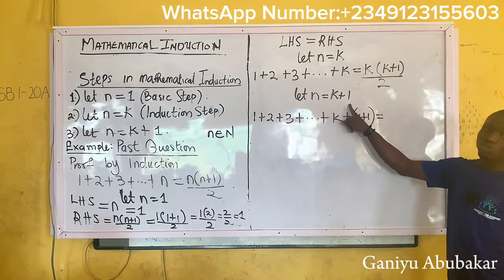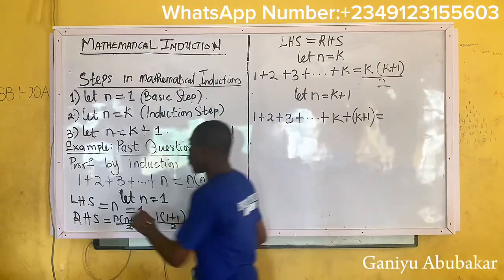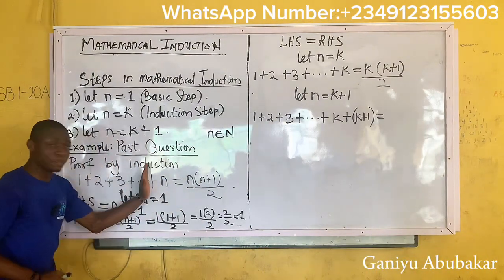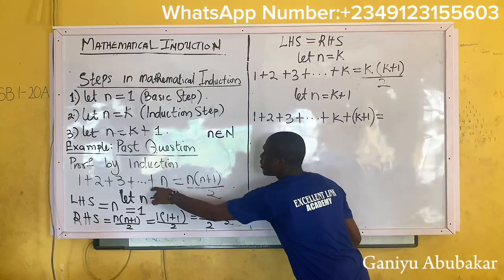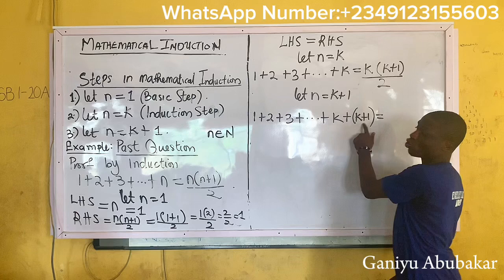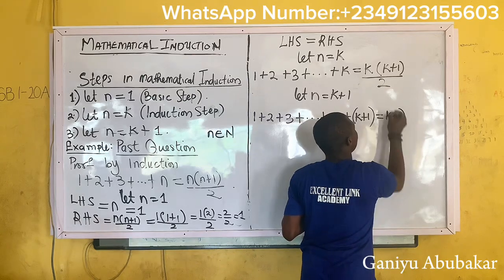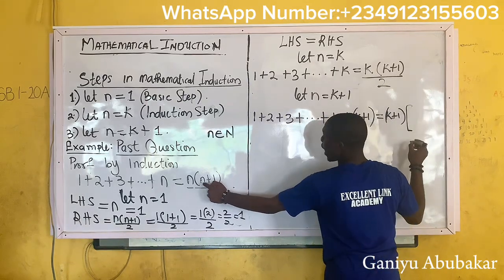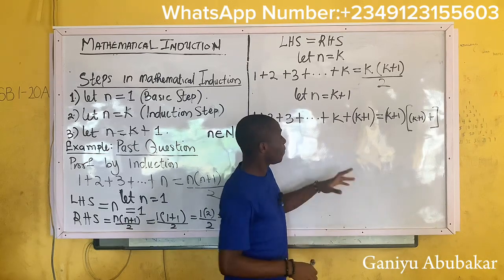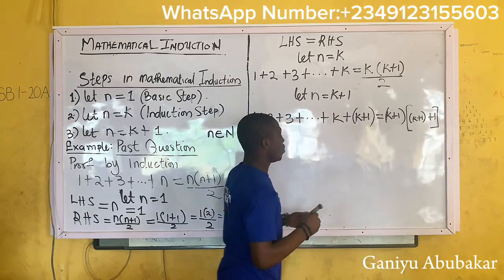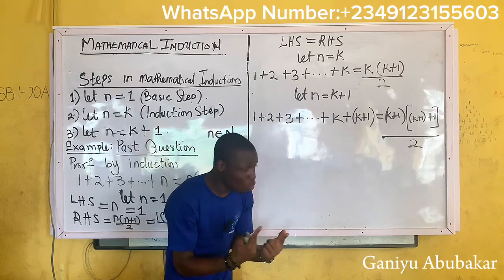When it comes to putting n as k plus one, repeat your assumption down first. Go back to your question, from this point down to this point. Repeat everything down here and put n as k plus one. So n is k plus one, equal to k plus one into k plus one plus one over two. Observe the way I'm differentiating my square brackets and round brackets.